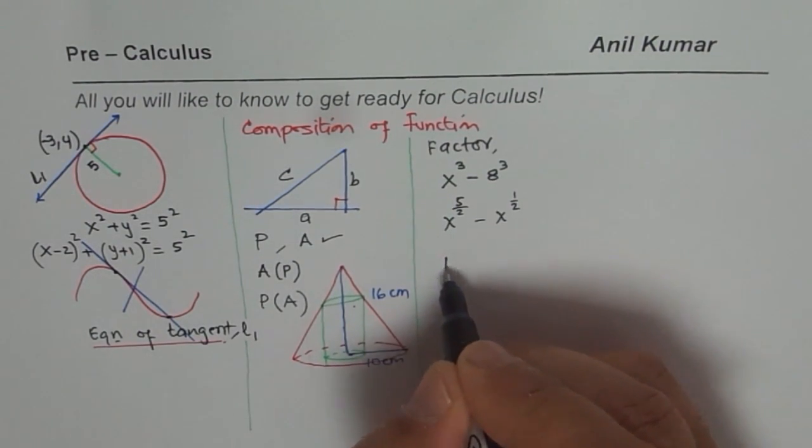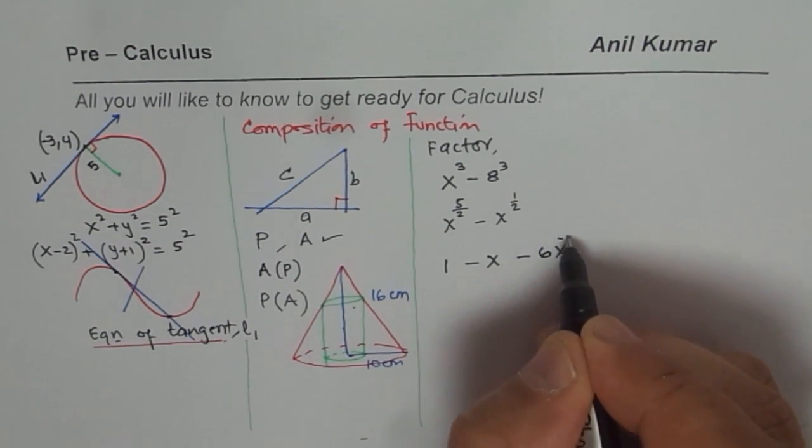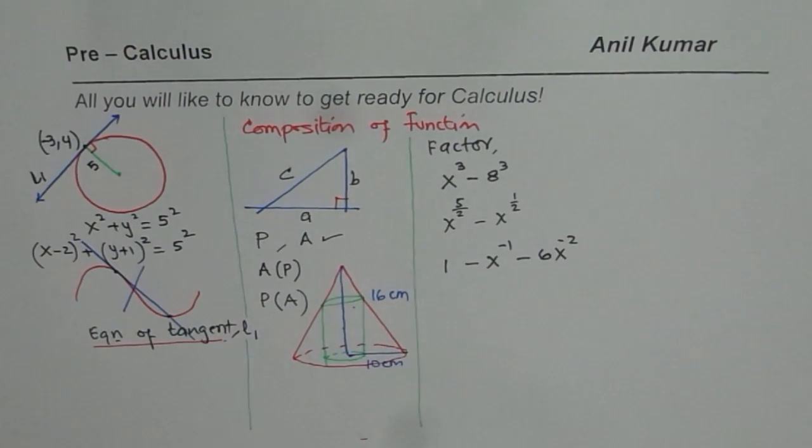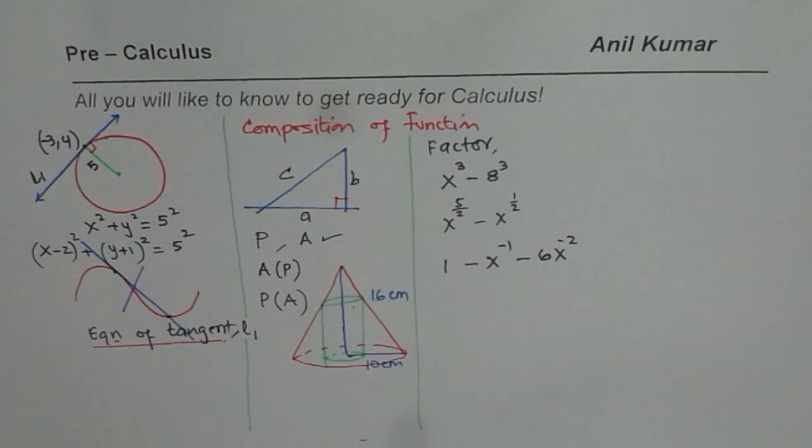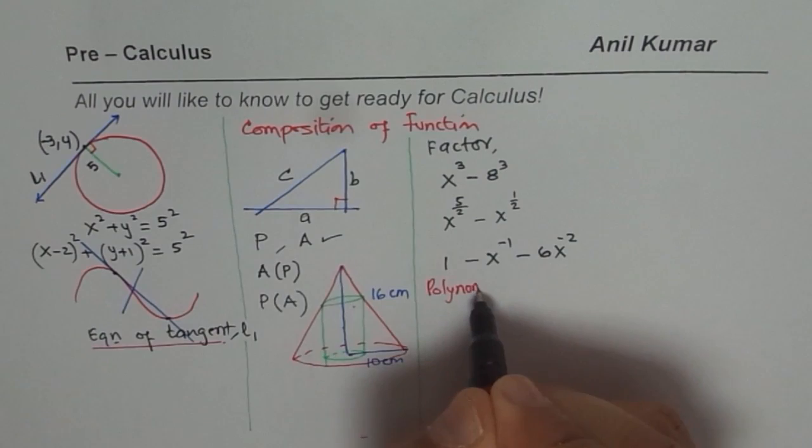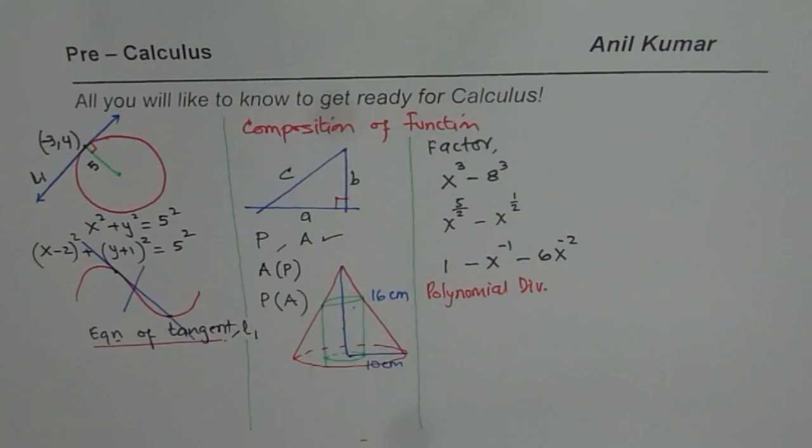Now I could have factoring as x to the power of 5 over 2 minus x to the power of half. You should know how to factor these. I could write something like x to the power of minus 1 minus 6 x to the power of minus 2. If I have something like this, how to factor these type of factors. Factoring you should be really good at. You should review polynomial division to factor. Because in calculus we'll be having many equations which will be equations of polynomials. You need to review this aspect and understand factoring techniques. I'll give you a link on factoring techniques also.